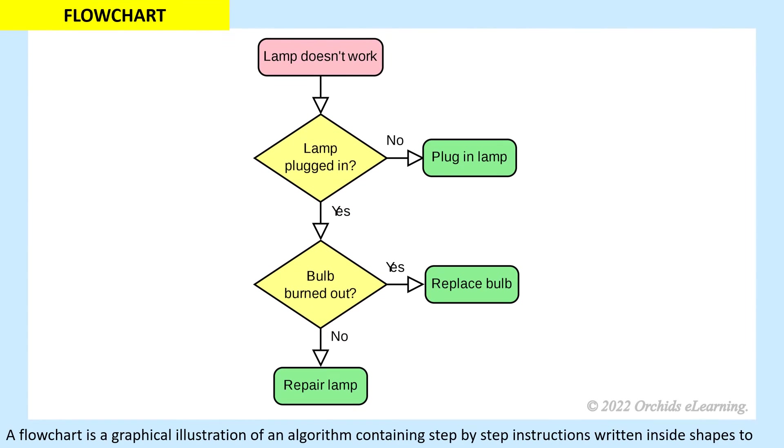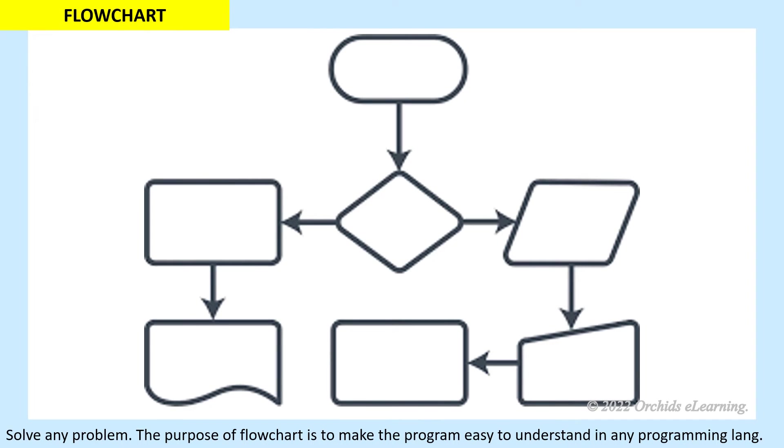A flow chart is a graphical illustration of an algorithm containing step-by-step instructions written inside shapes to solve any problem. The purpose of a flow chart is to make the program easy to understand in any programming language.